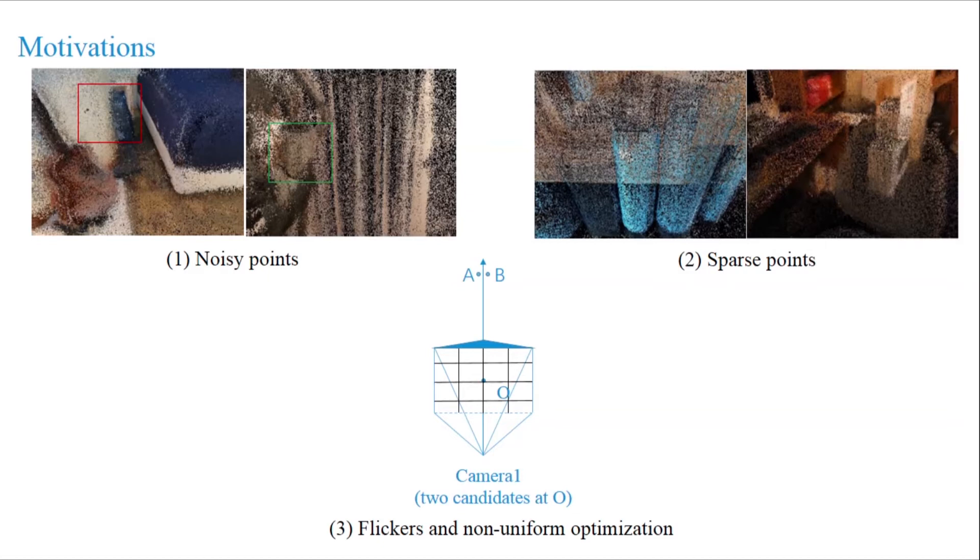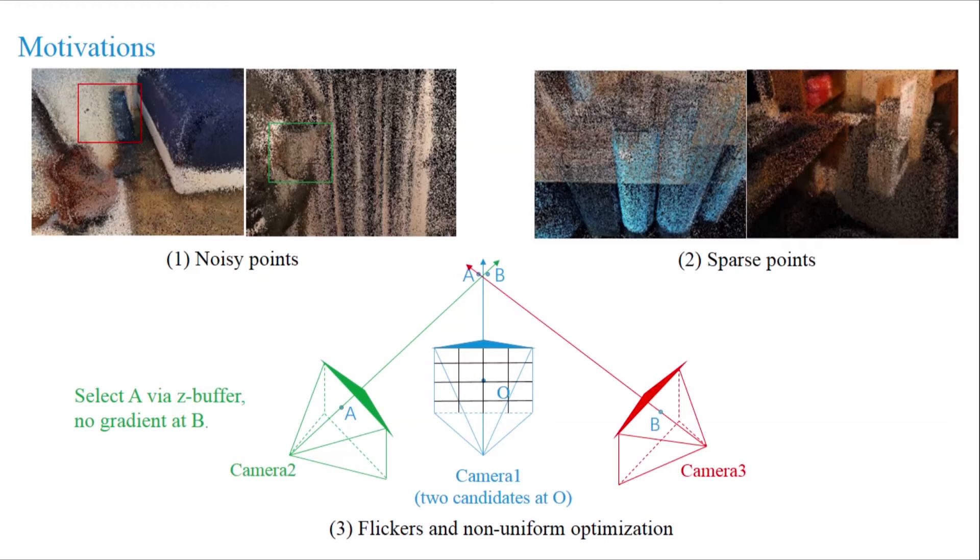Third, flickers and non-uniform optimization via Z-buffer rasterization. For example, a small movement of camera will cause different selections, and only one point is optimized.